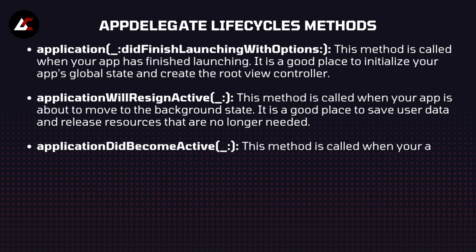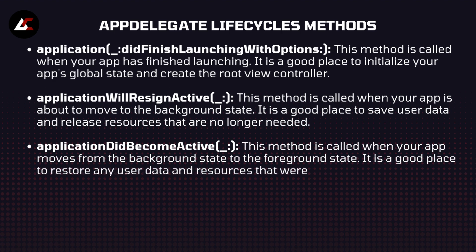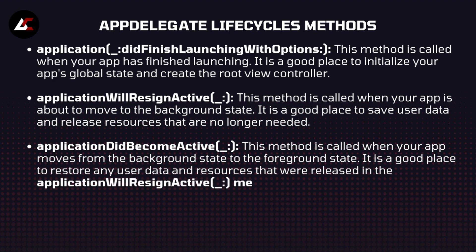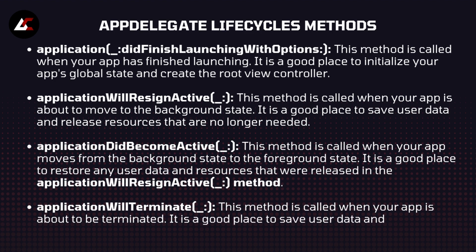Application did become active — this method is called when your app moves from the background state to the foreground state. It is a good place to restore any user data and resources that were released in the application will resign active method. Application will terminate — this method is called when your app is about to terminate. It is a good place to save user data and release resources that are no longer needed.